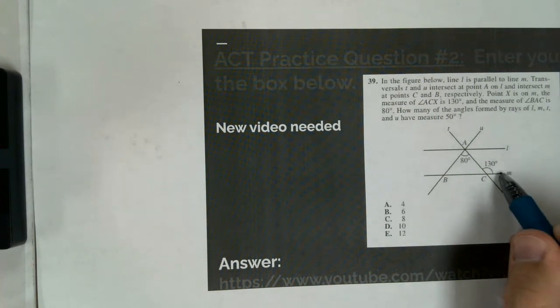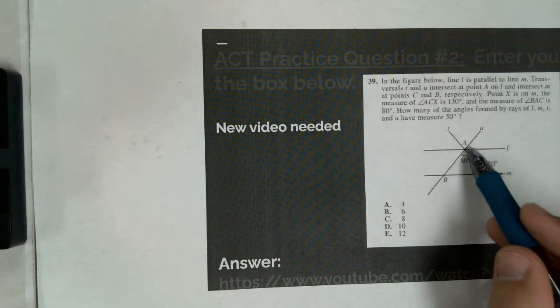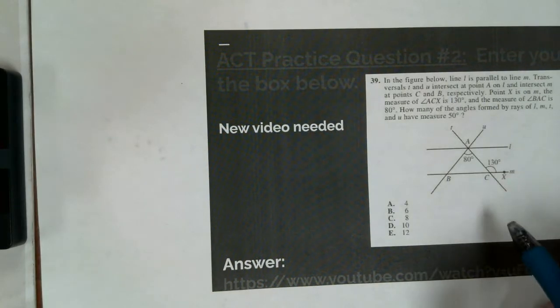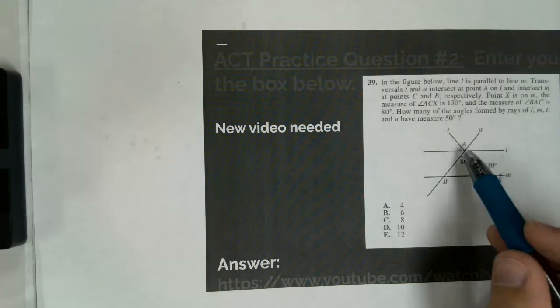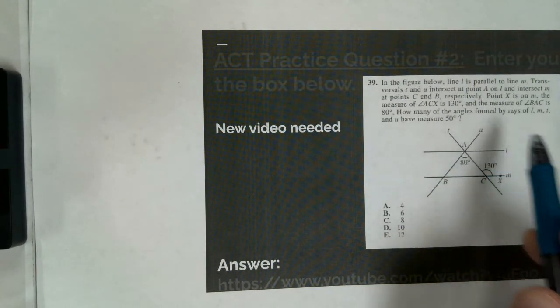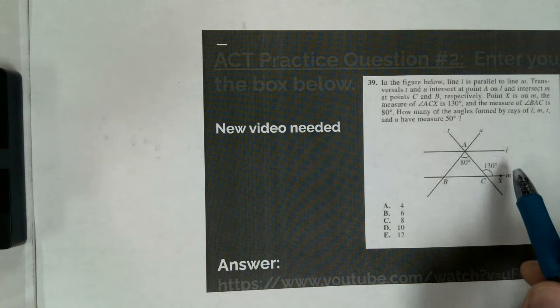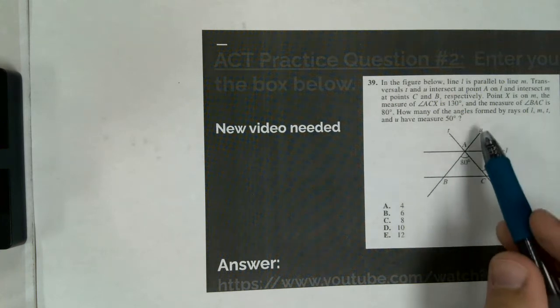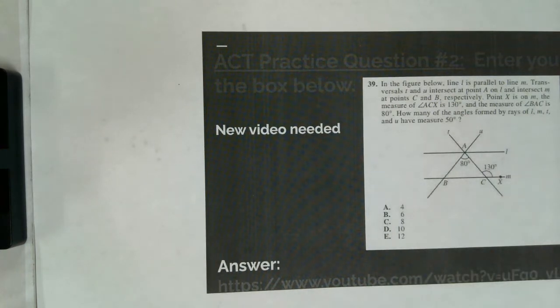Point X, right here, is on M. The measure of ACX, I've already marked the 4s, is 130 degrees. The measure of BAC is 80 degrees. How many angles formed by rays L, M, and T, and U have a measure of 50 degrees?